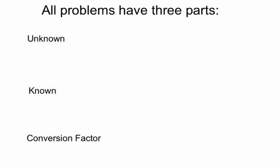For the quantities given to you in a problem, it is important to determine which number goes with which part — the known, the unknown, or the conversion factor. The easiest quantity to start looking for is the unknown. When you read the problem, look for key words. The key words for the unknown include: how much, how many, what is, how long, calculate, find. These are the most common ones used to identify the unknown.